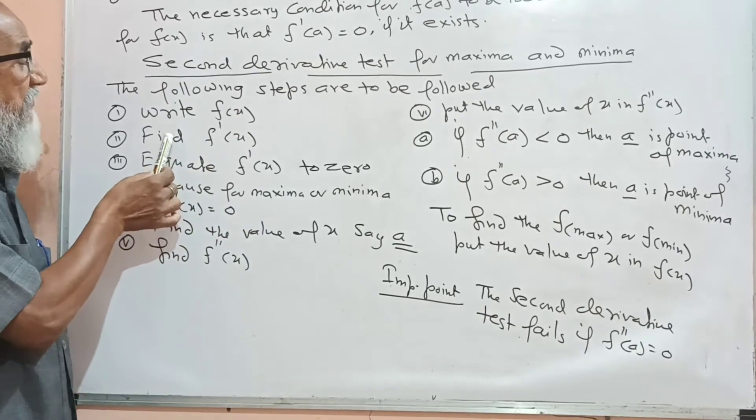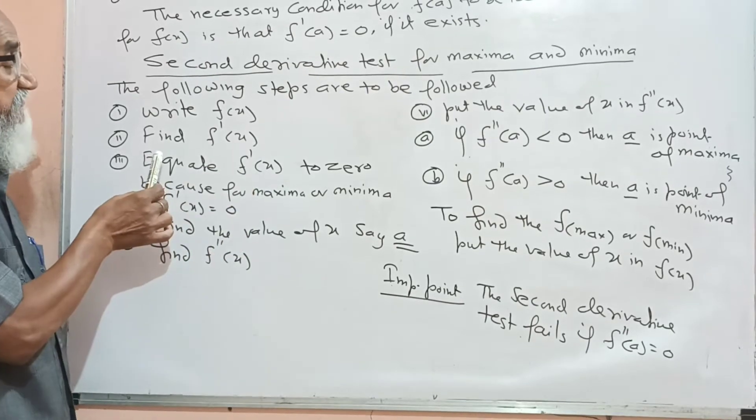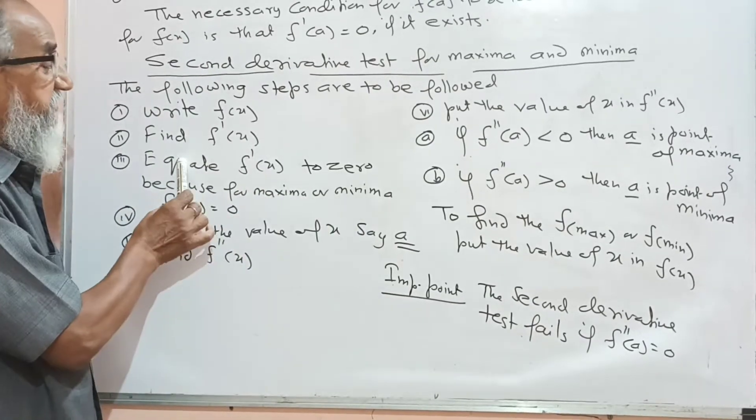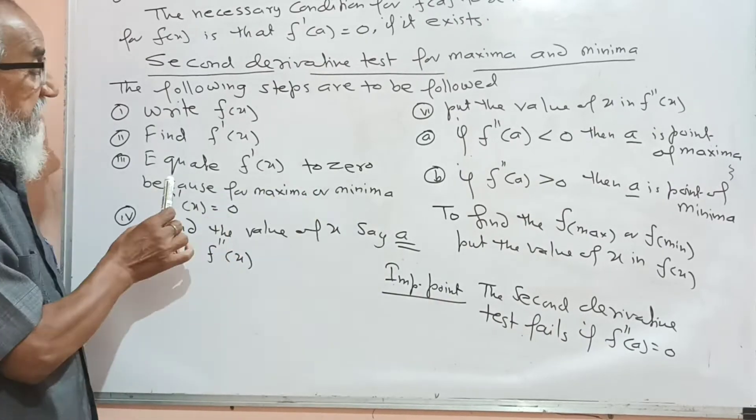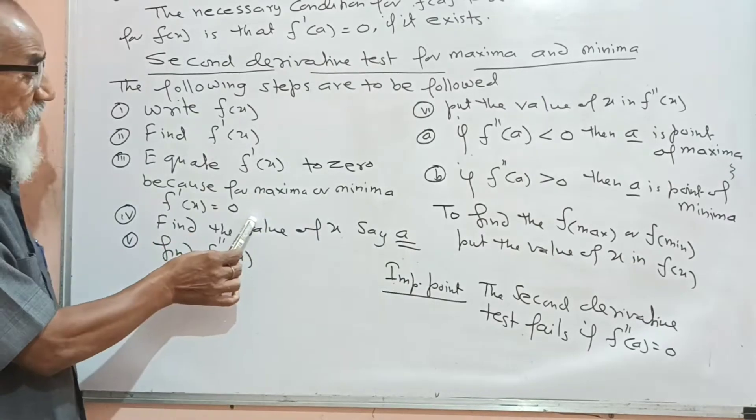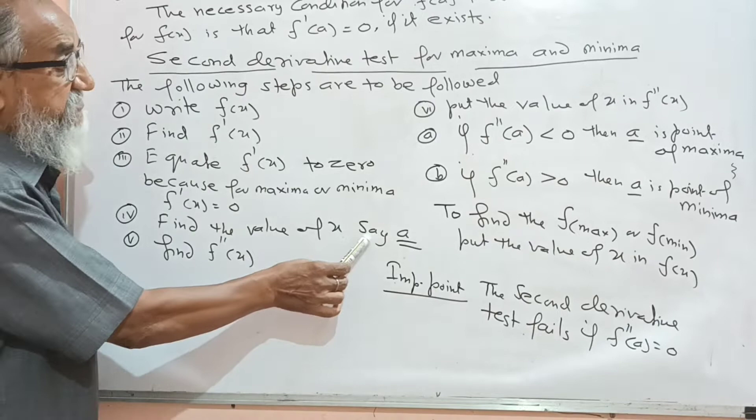Then the first step is find the first derivative, that is f'(x). Then equate f'(x) to 0, because for maxima or minima, f'(x) equals 0. Find the value of x, say a.